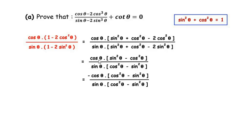Simplifying this, in the numerator we get cos θ times (sin²θ − cos²θ), since cos²θ − 2cos²θ = −cos²θ. Similarly in the denominator we get sin θ times (cos²θ − sin²θ), since sin²θ − 2sin²θ = −sin²θ.